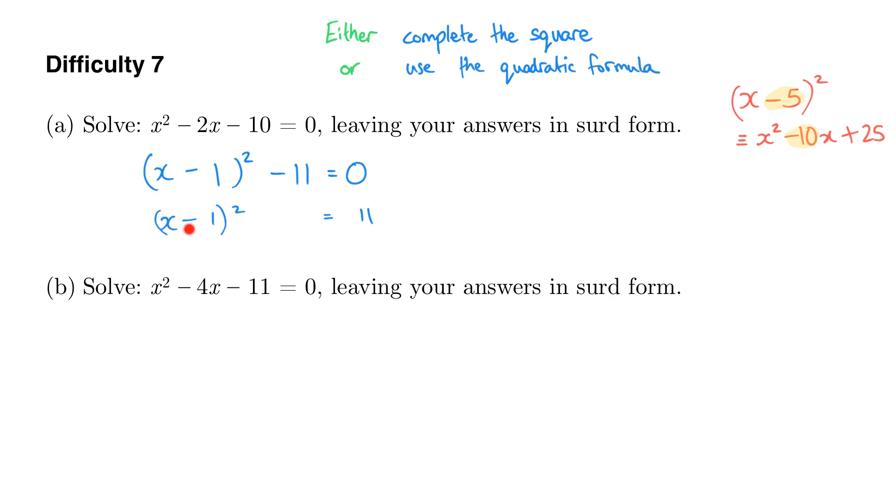So because we've got something squared, taking the square root effectively just undoes the squaring. So that means x minus 1 equals, except you need to remember that when you take the square root you have plus or minus. You've got the positive or negative square root. Now if I just carry on my working on the right hand side, we've got x minus 1 being this quantity, plus or minus the square root of 11. And that means x equals 1 plus or minus the square root of 11.